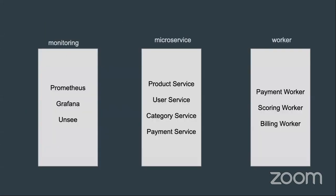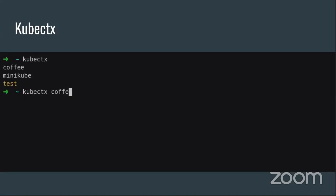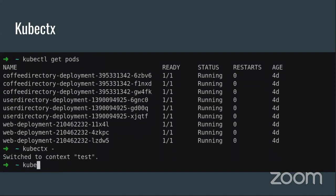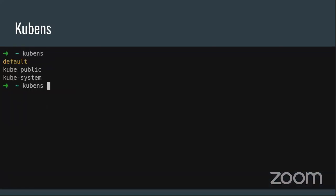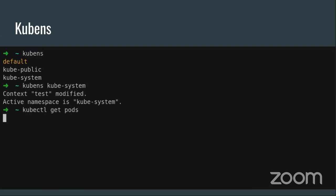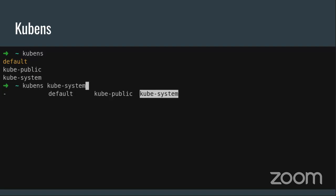If you have a Kubernetes cluster, you'll use kubectl very frequently. I want to introduce two tools: kubectx and kubens, which are inside the same GitHub repository. Kubectx is for managing your Kubernetes context — if you have multiple Kubernetes clusters, you can switch between them easily. Kubens is for managing your namespace. Without these tools, you'd need to use very long kubectl commands that are hard to remember.